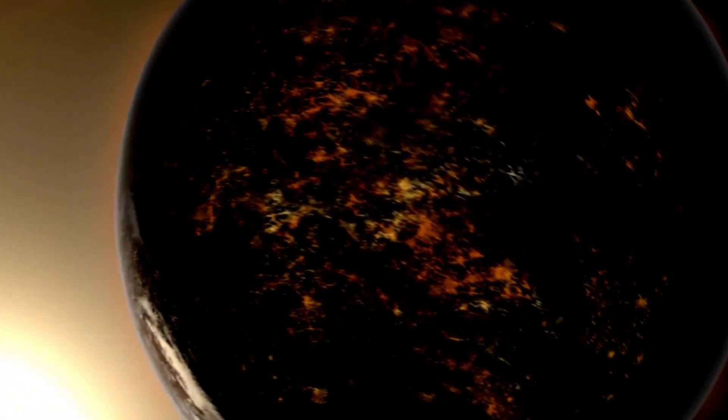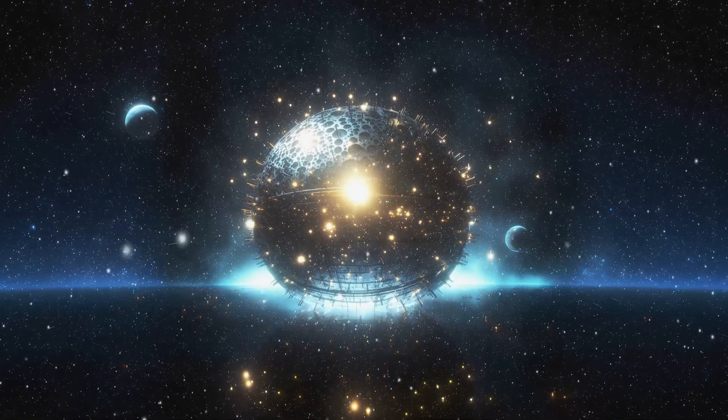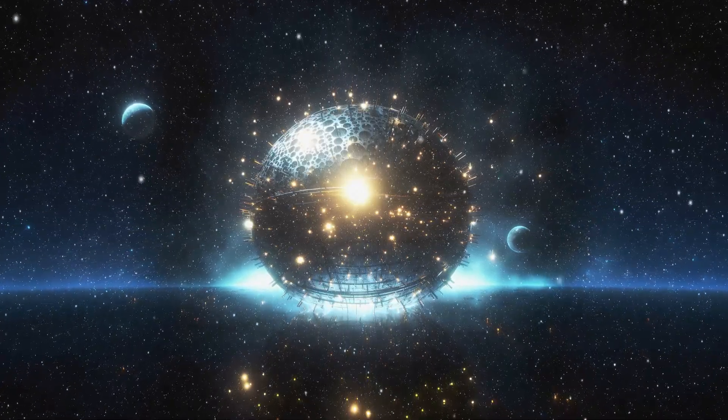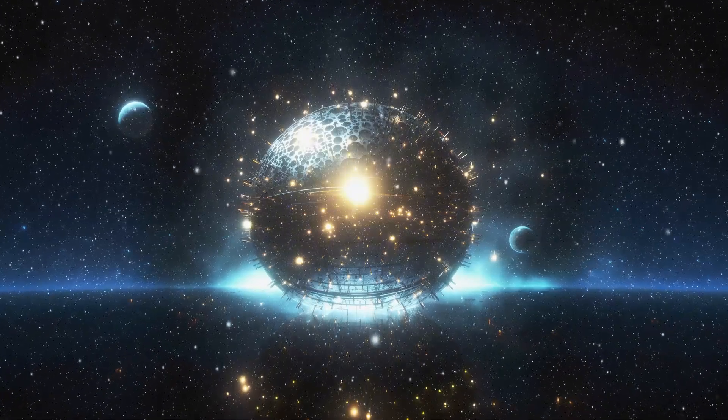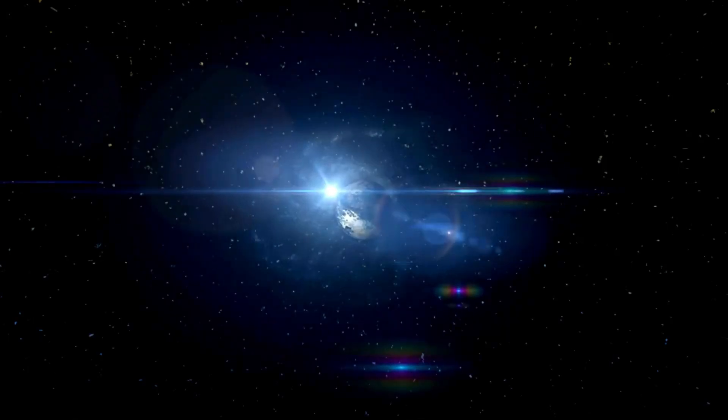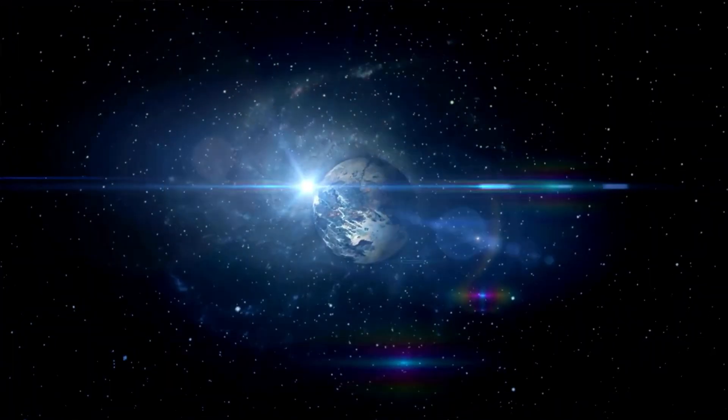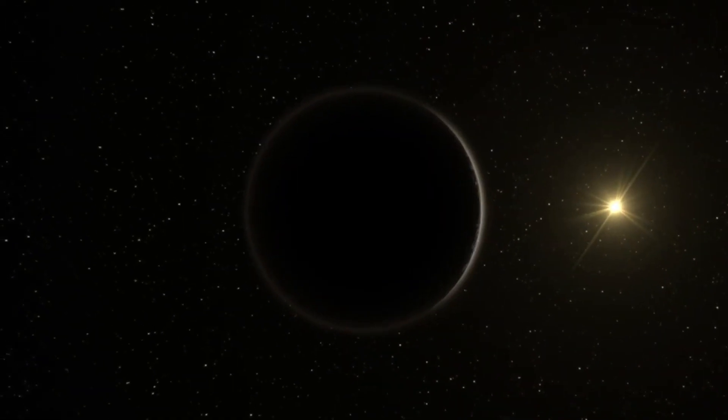But wait, there's more. Proxima b isn't alone in that system around the red dwarf star. It has a companion, Proxima Centauri c, which could reveal even more secrets the star system holds. Maybe there's another companion we haven't discovered yet. The mystery doesn't end there.